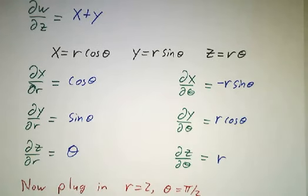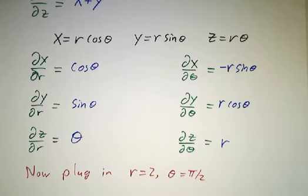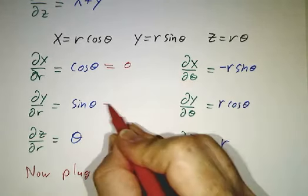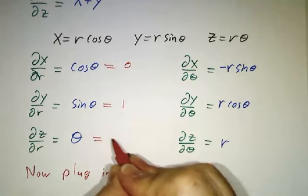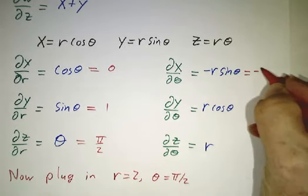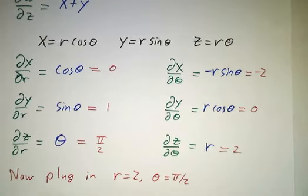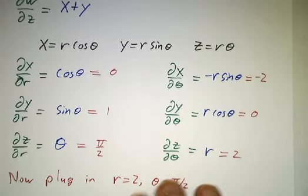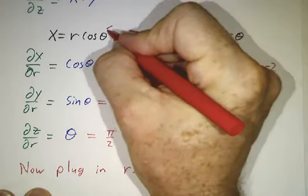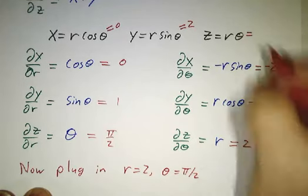Now we plug in our point at r = 2 and θ = π/2. When θ = π/2, cos θ = 0 and sin θ = 1, so ∂x/∂r = 0, ∂y/∂r = 1, ∂z/∂r = π/2. And ∂x/∂θ = -2, ∂y/∂θ = 0, ∂z/∂θ = 2. The coordinates themselves are x = 0, y = 2, and z = π.